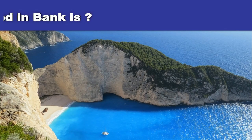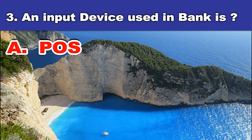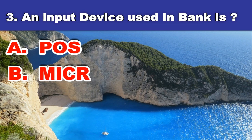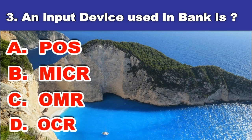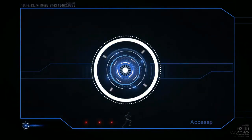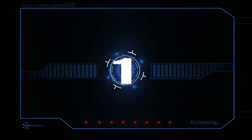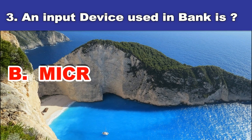Third question. An input device used in a bank is? A. POS. B. MICR. C. OMR. D. OCR. And the answer is: MICR.